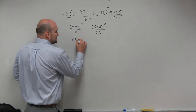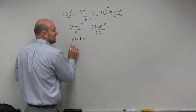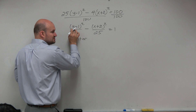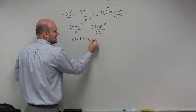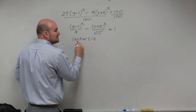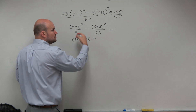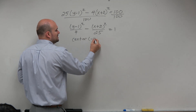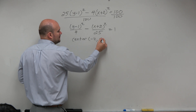The center is still the same — that's h and k. Remember, h is always with x and k is always with y. So our center in this case, since it's x minus h and y minus k, is going to be negative 2 comma 1.